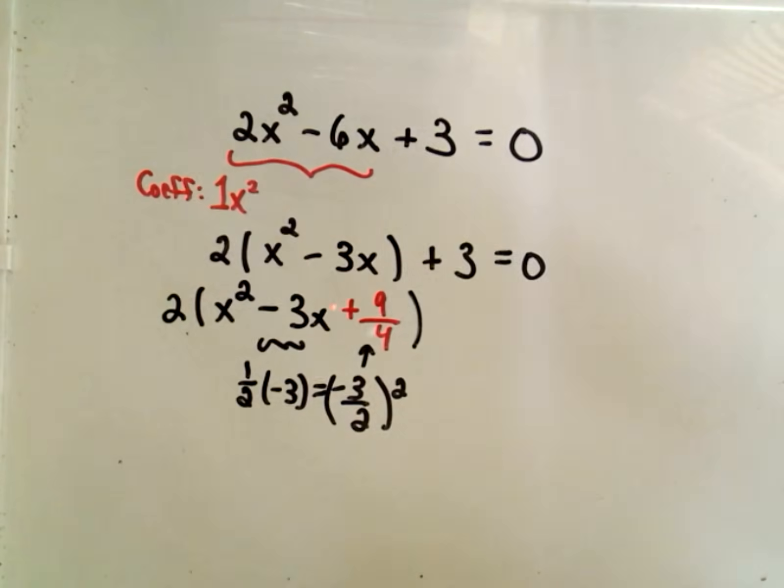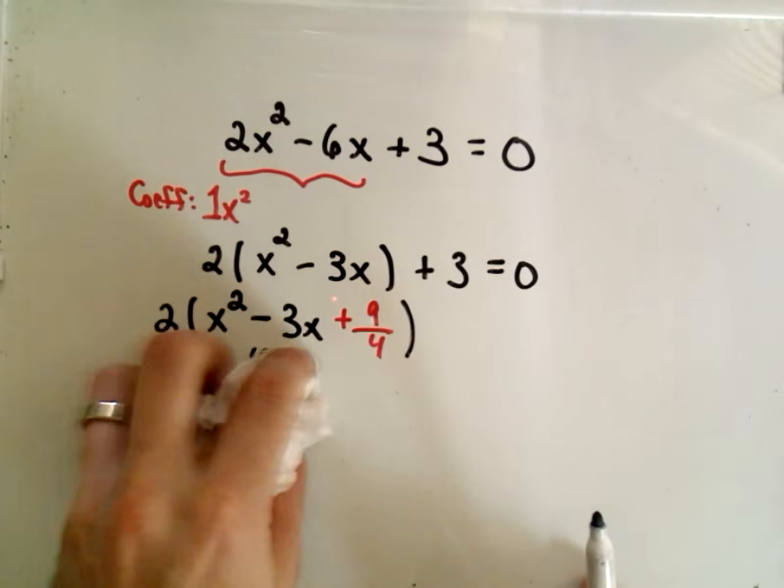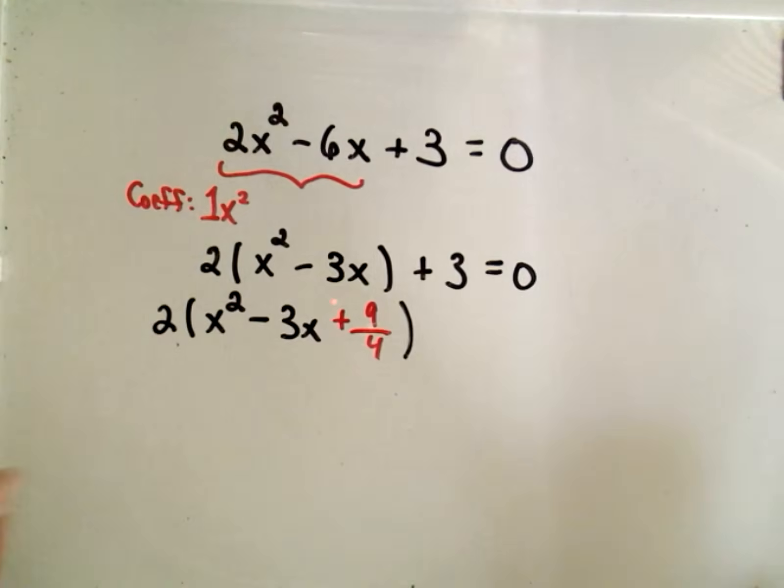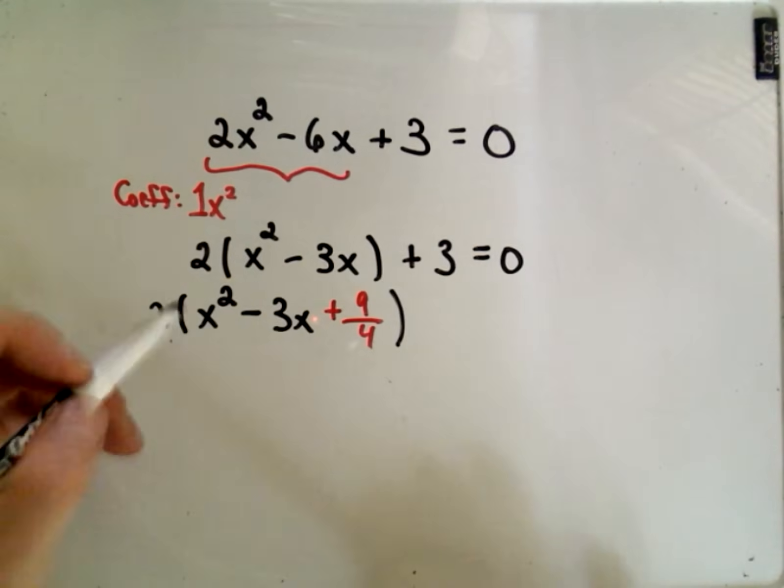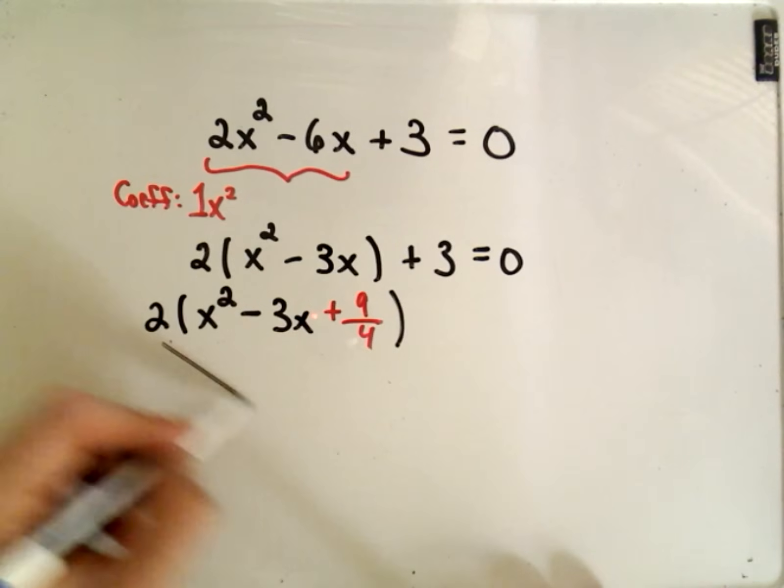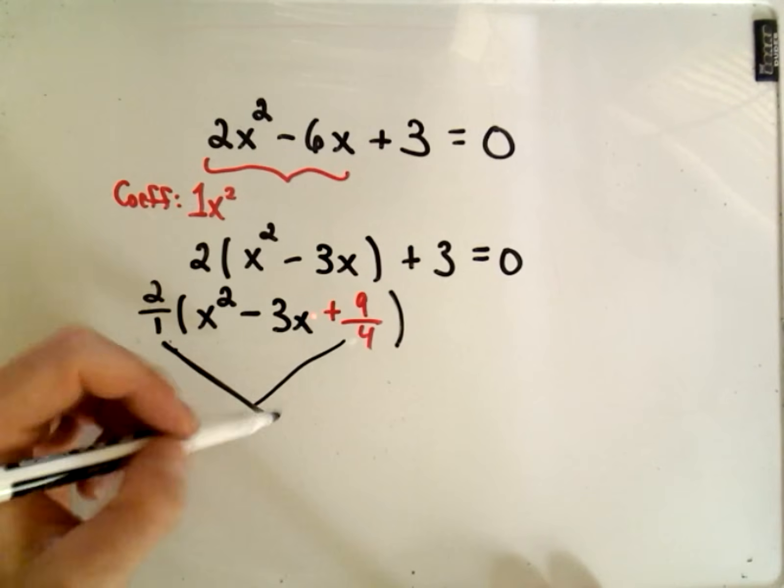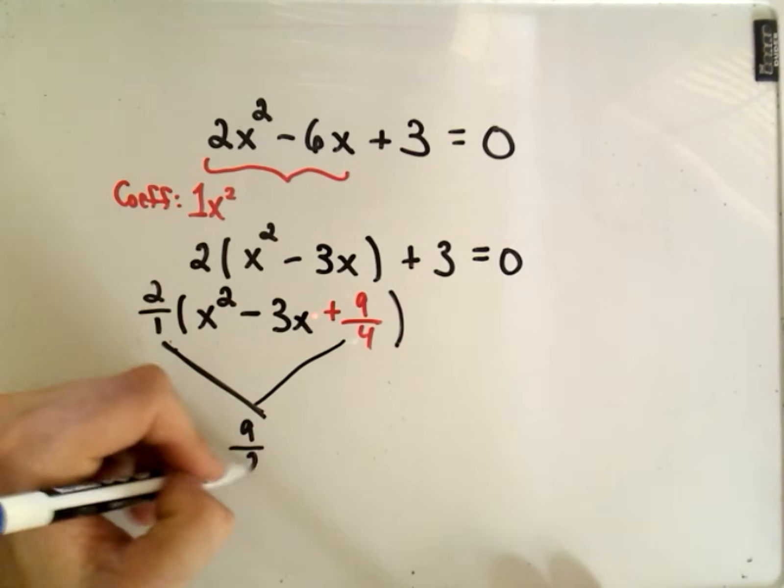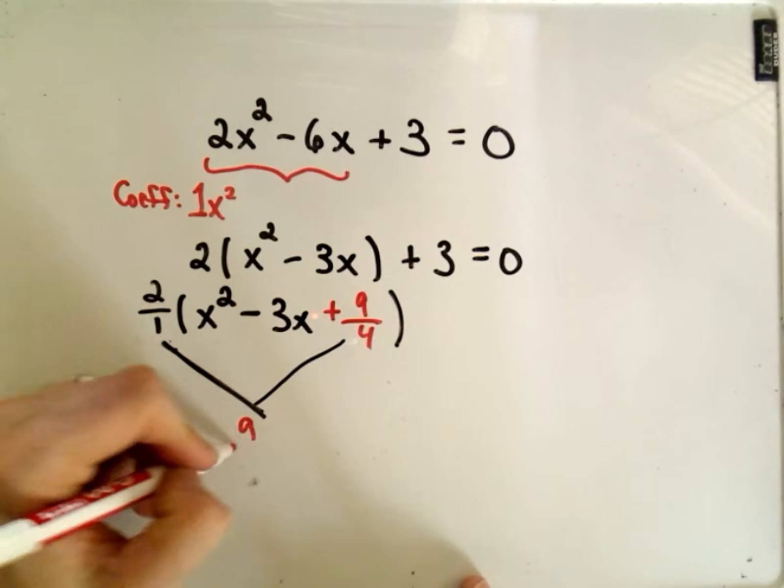Okay, so now we have to subtract away a little bit to account for that. So notice if we were to multiply this thing out, what would we have? We would have 2x squared, like before, we would have a negative 6x. But when I multiply the 2 and the 9 fourths, I'm multiplying by 2, which is 2 over 1. If I multiply, I'll get 18 over 4, which is 9 halves.